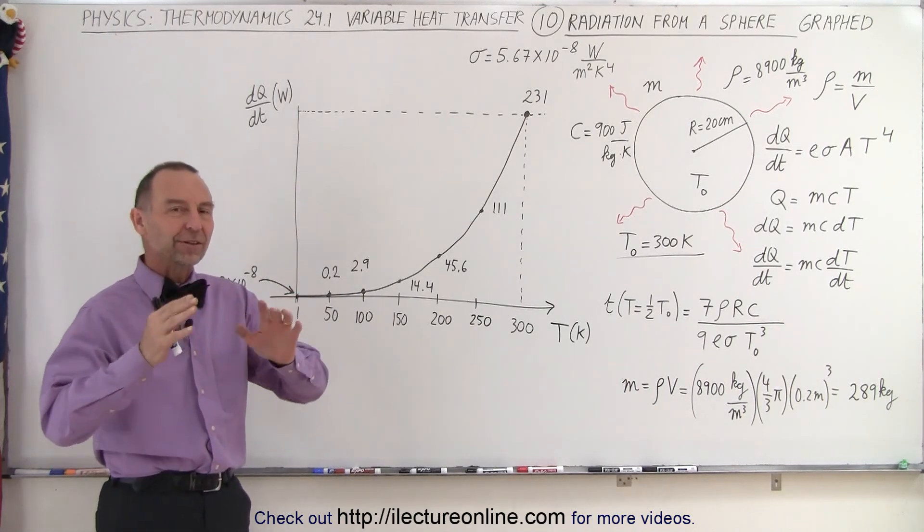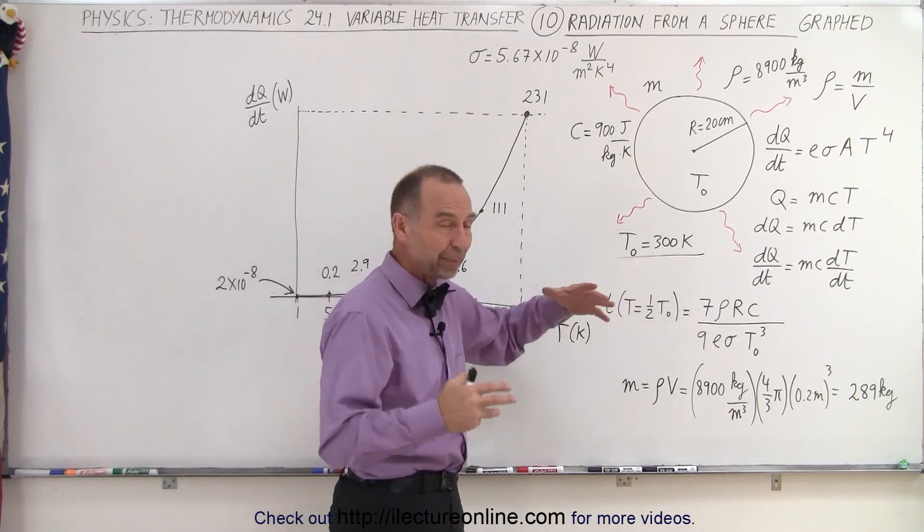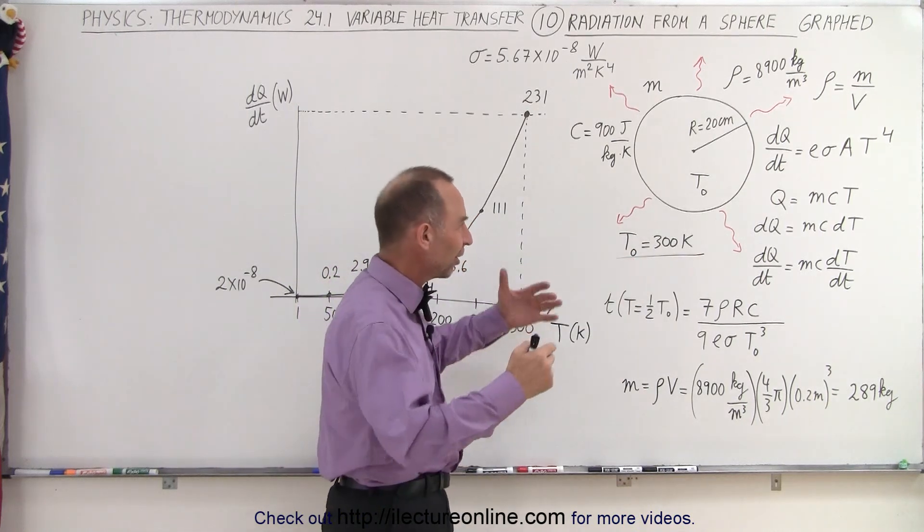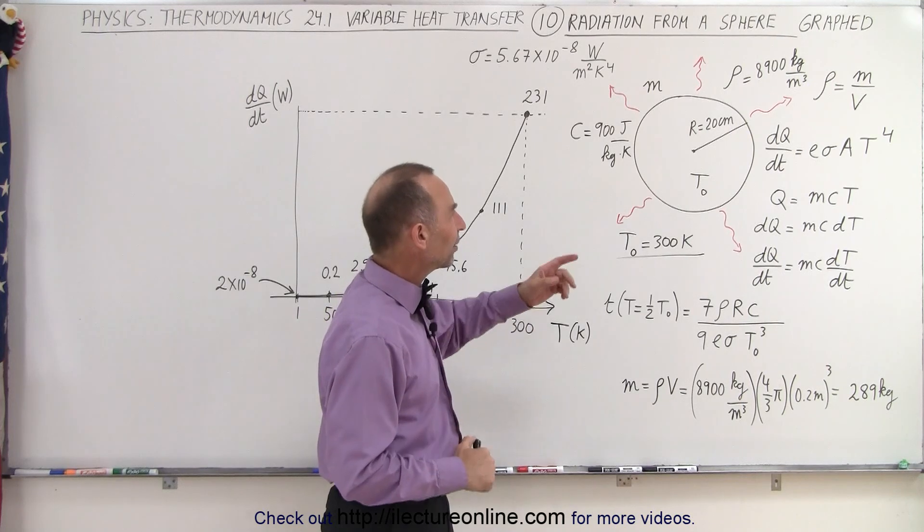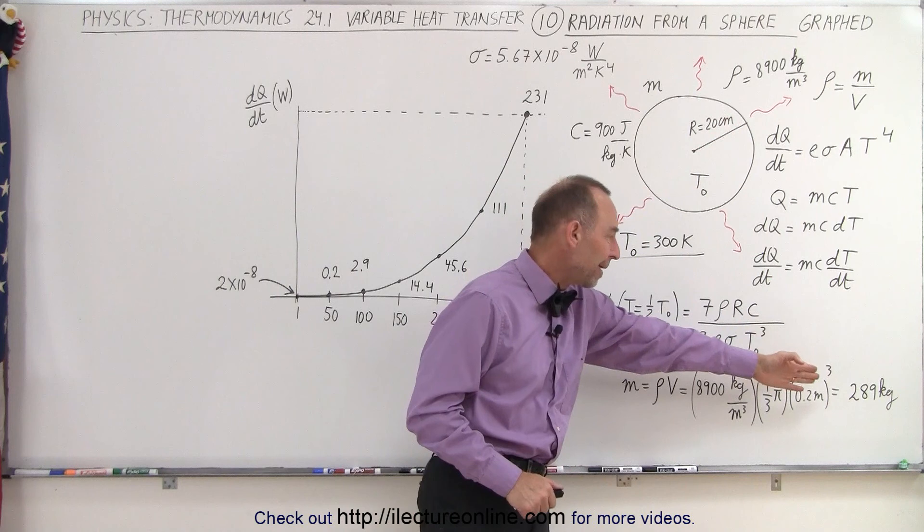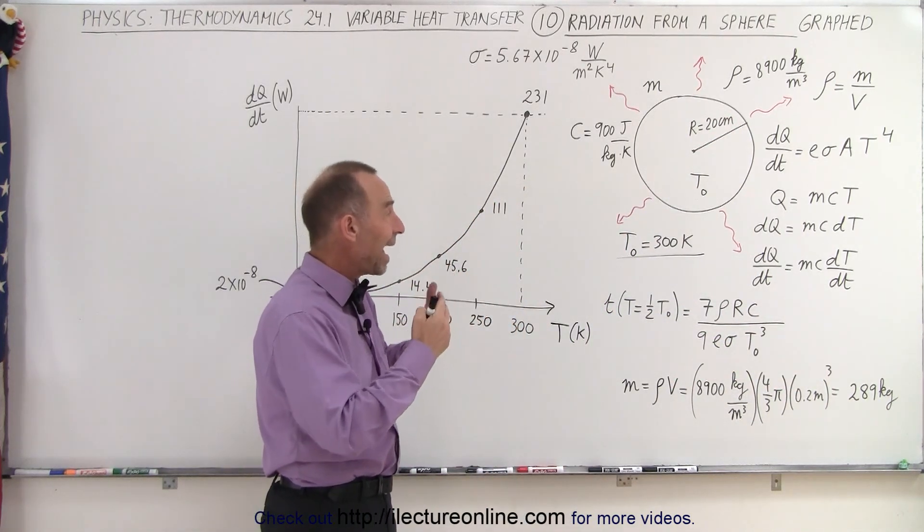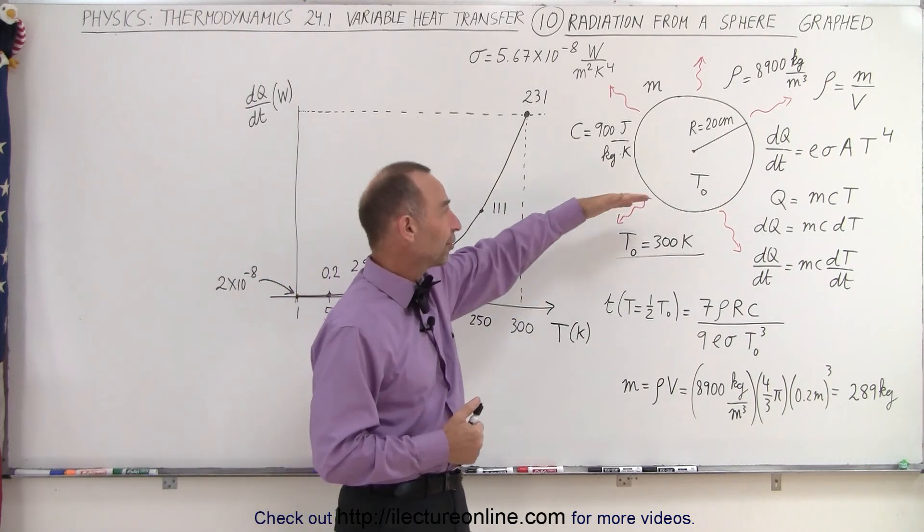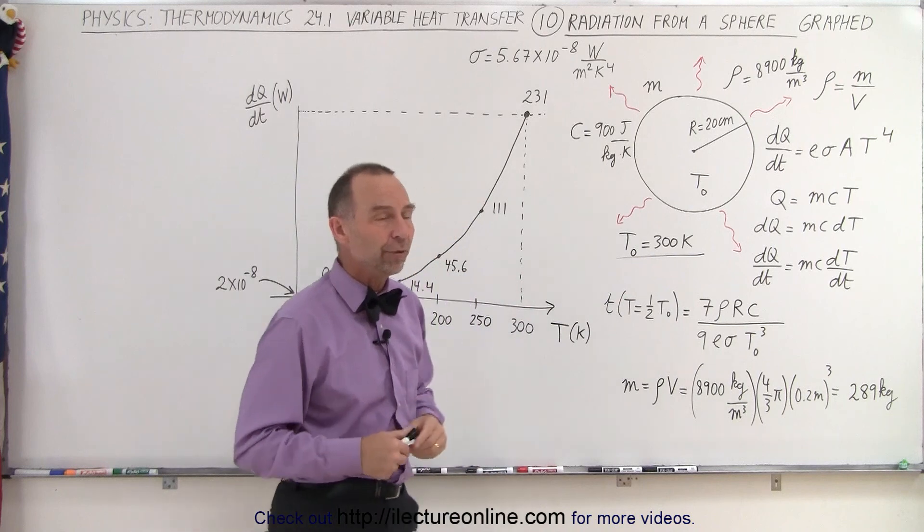So here we had a sphere that we saw in previous videos that started out at 300 Kelvin. We placed it out in space far away from the sun where it would not be receiving any additional energy. And assuming that the sphere had a radius of 20 centimeters and made out of copper so that it had a mass of 289 kilograms, how long would it take for it to reach its half temperature? How long would it take for it to radiate out the heat so that it would be down to 150 Kelvin and so forth?